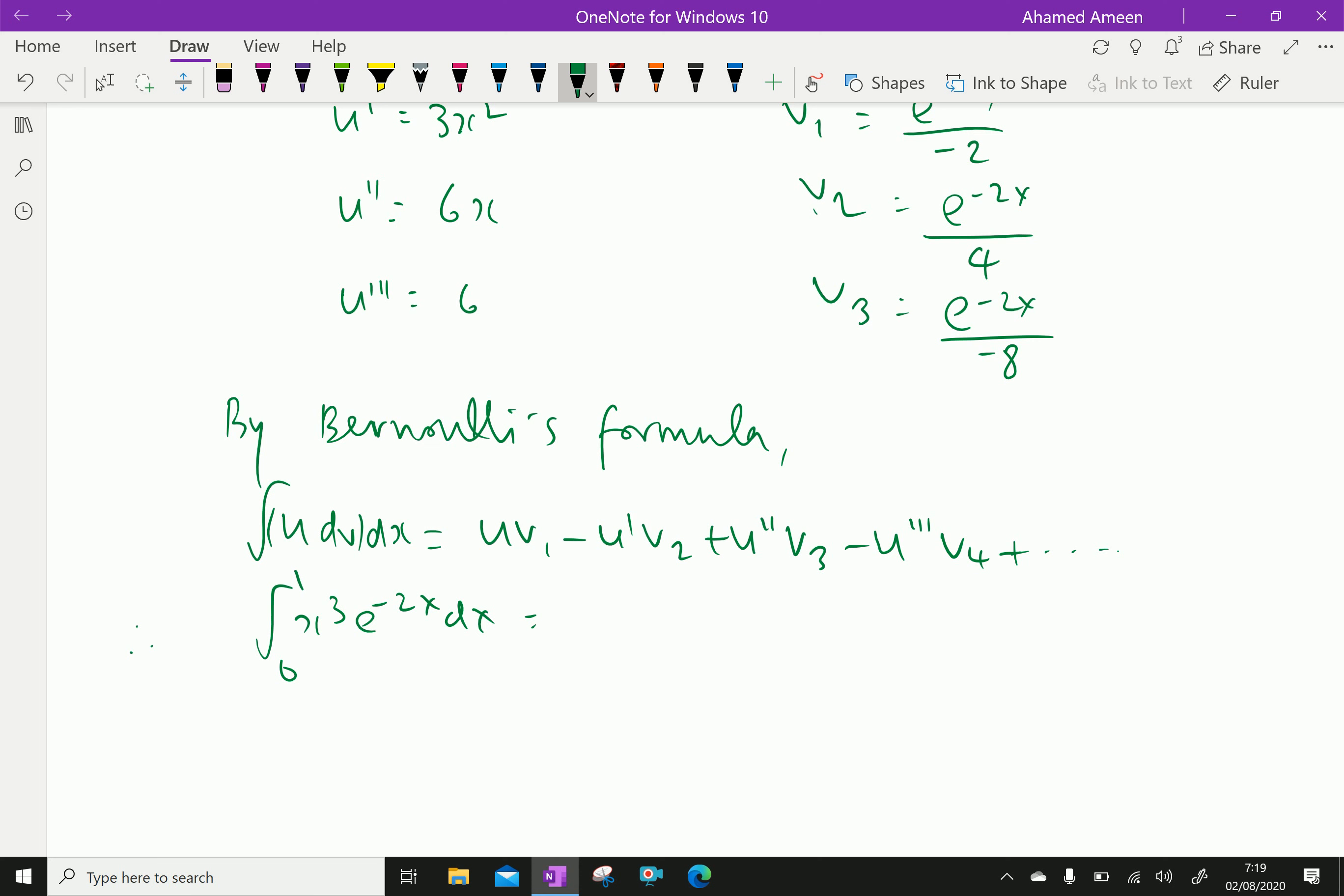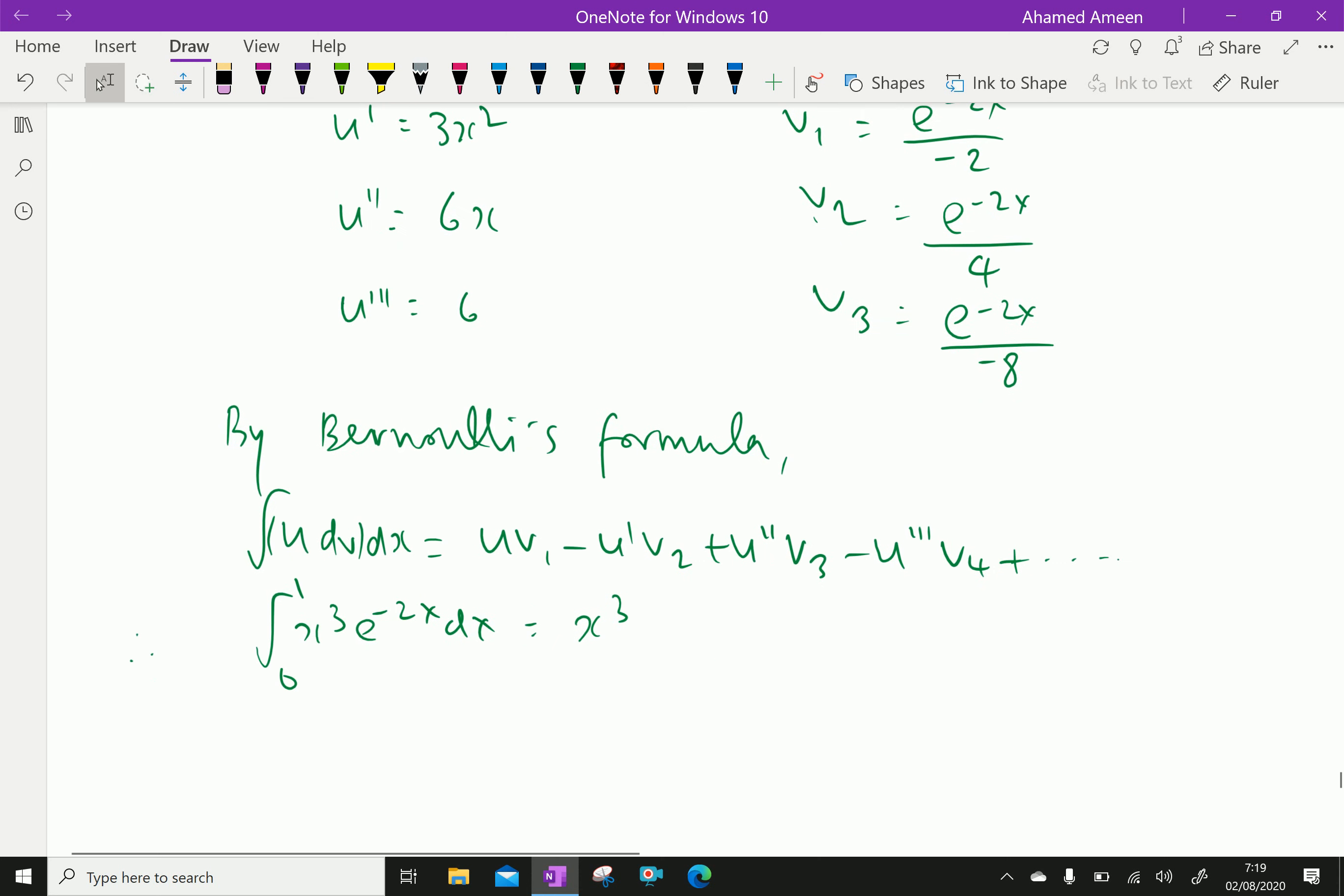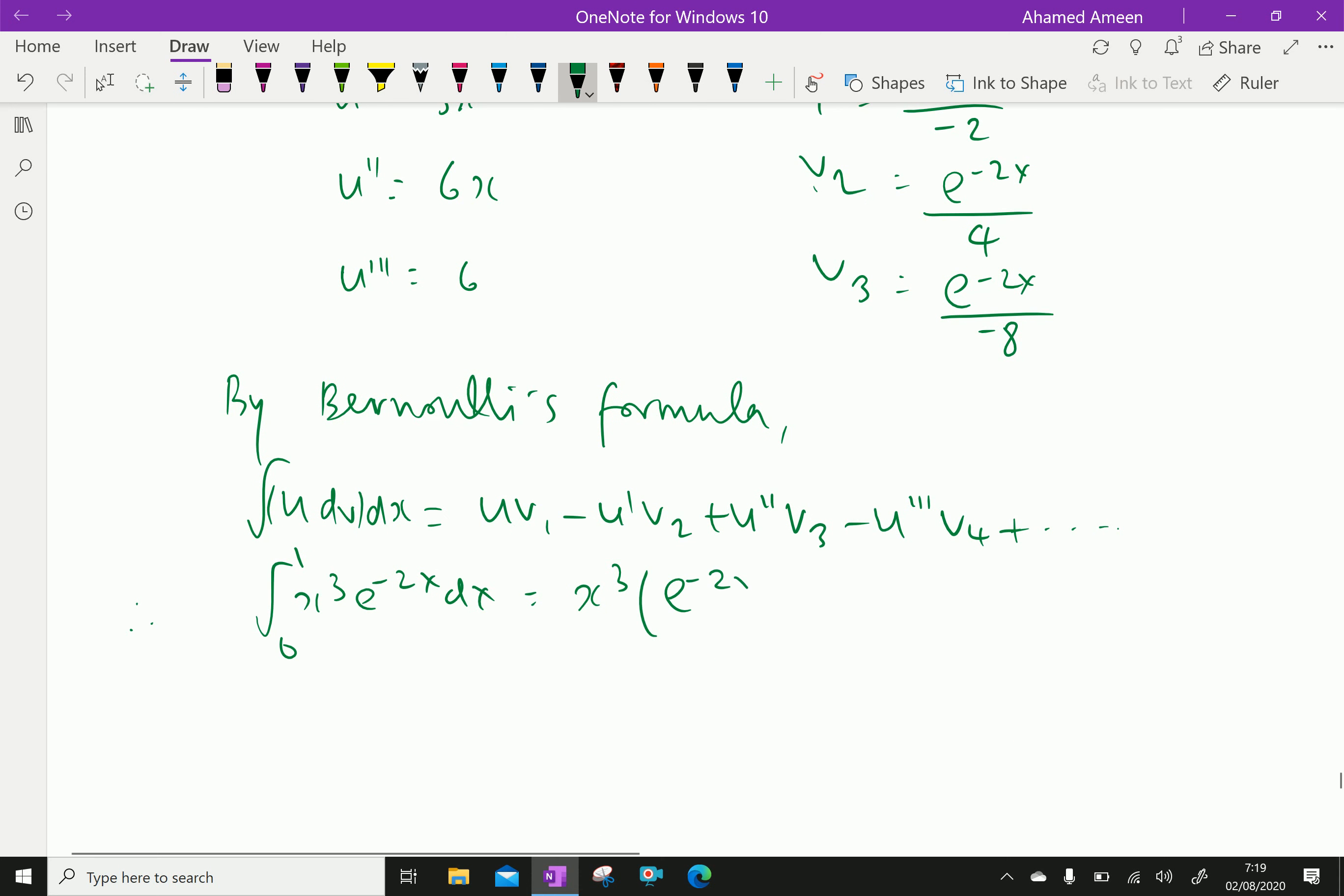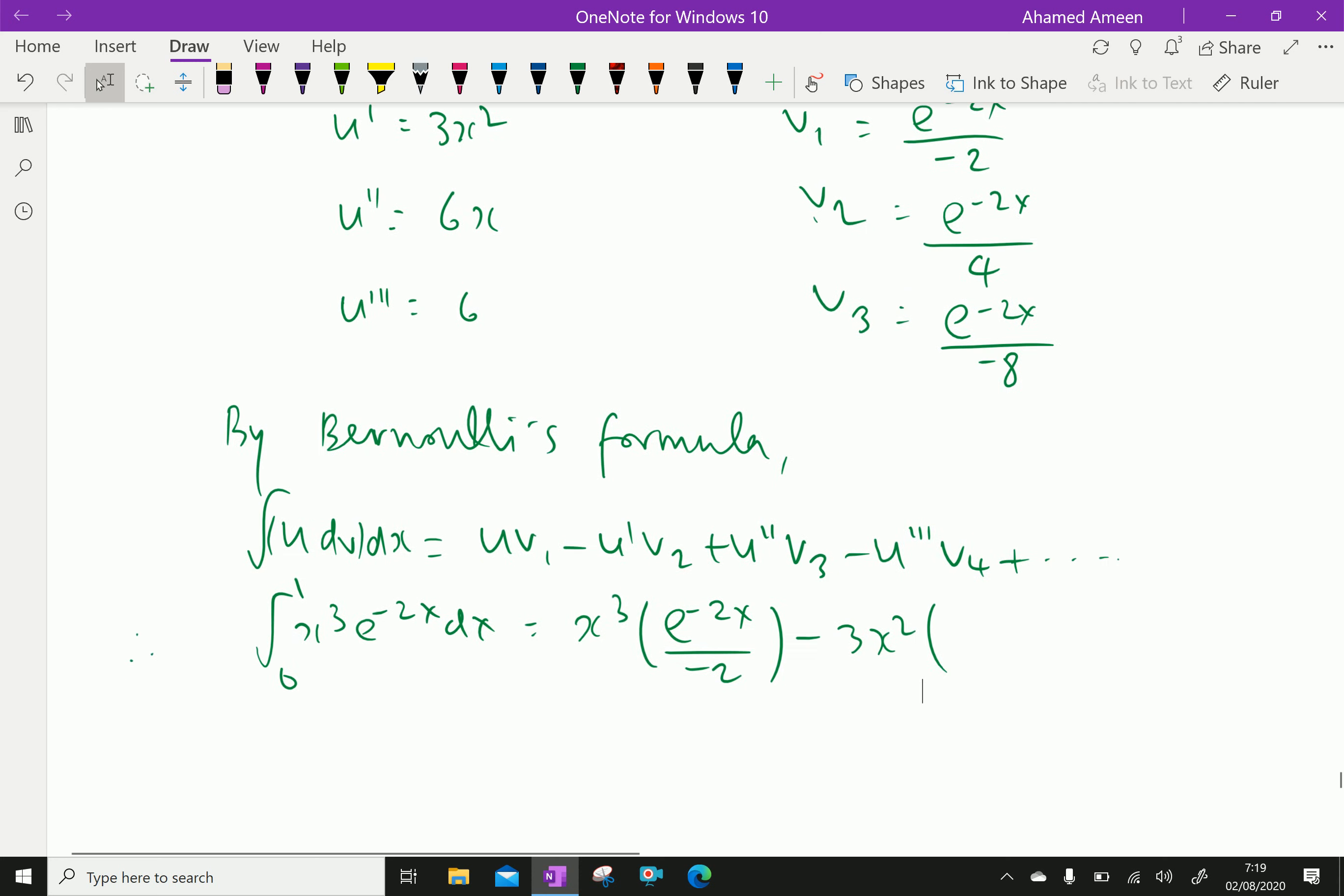Here, u is x cube, v1 is e power minus 2x over minus 2. Then, minus u dash is 3x square and v2 is e power minus 2x over 4.